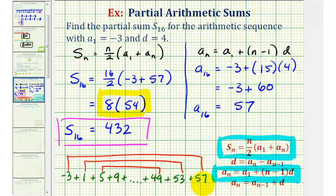And just because we're pairing these up, we have eight pairs of 54. And this is the reason why this product gives us our partial sum.